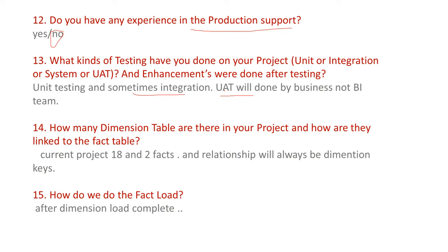UAT stands for User Acceptance Testing. How many dimension tables are there in your project and how are they linked to the fact table? In the current project, we have 18 dimension tables and 2 fact tables. Each dimension table has a primary key, which acts as a foreign key in the fact table. The fact table can have duplicates; dimension tables do not. Dimension tables also contain SCD types.